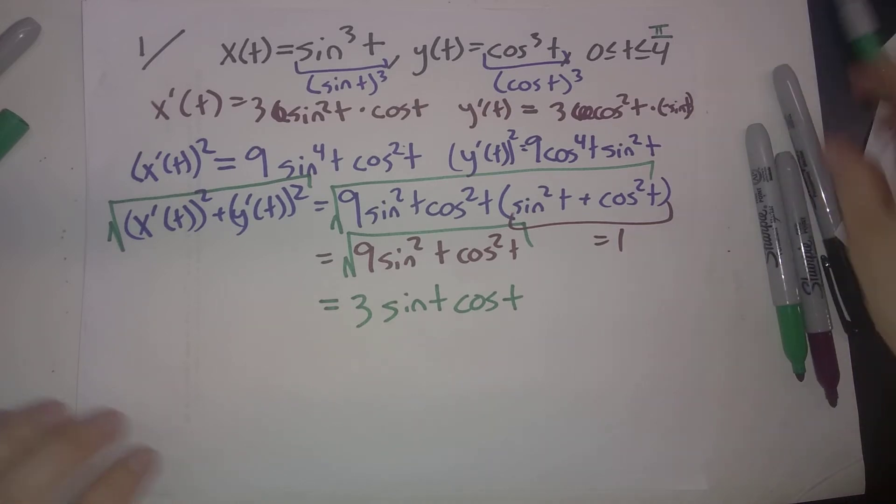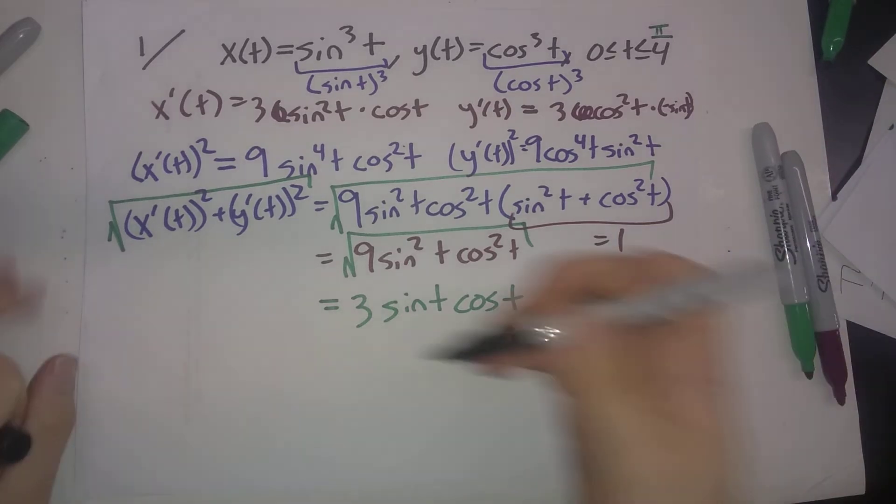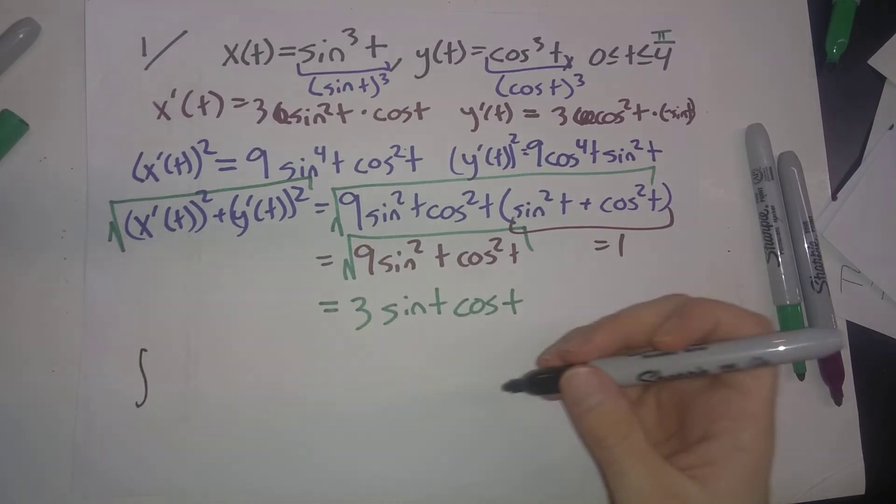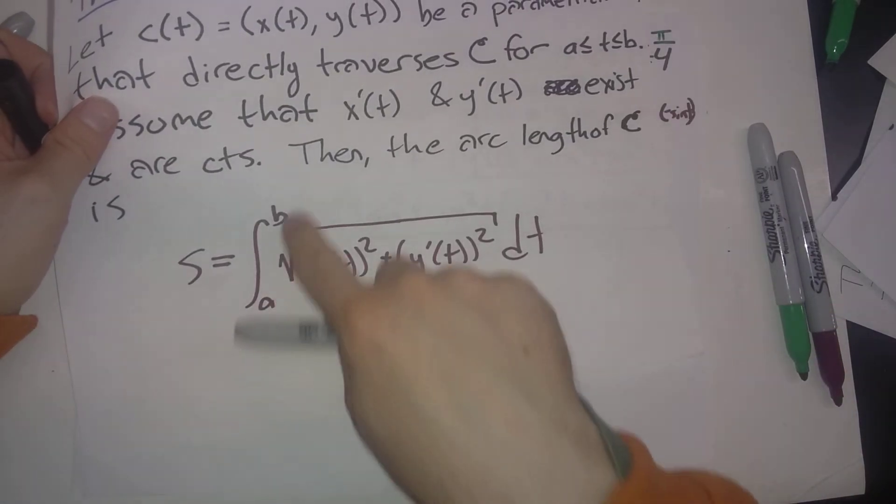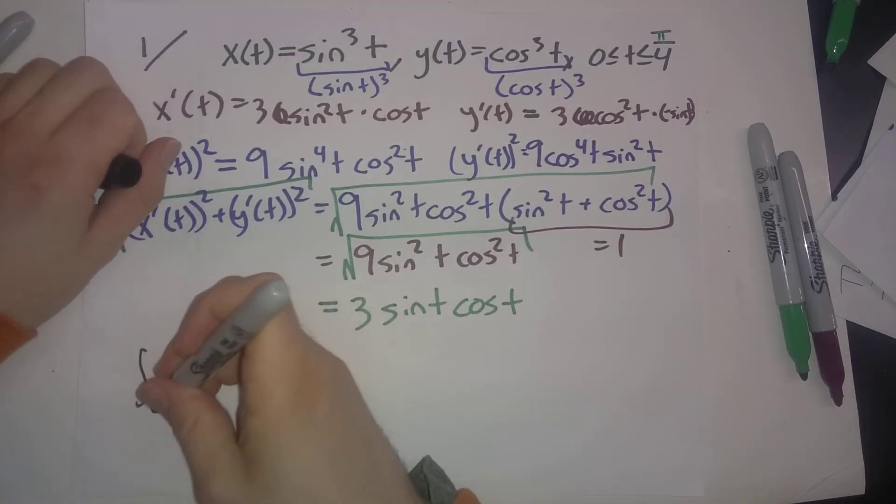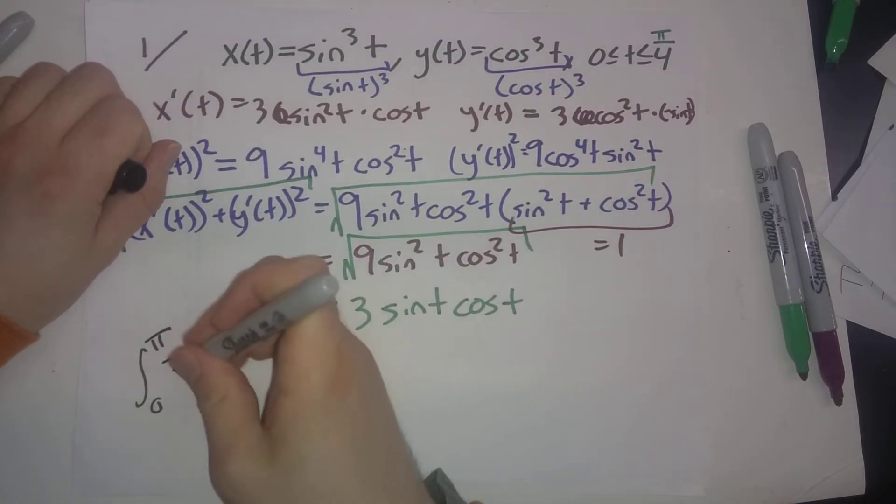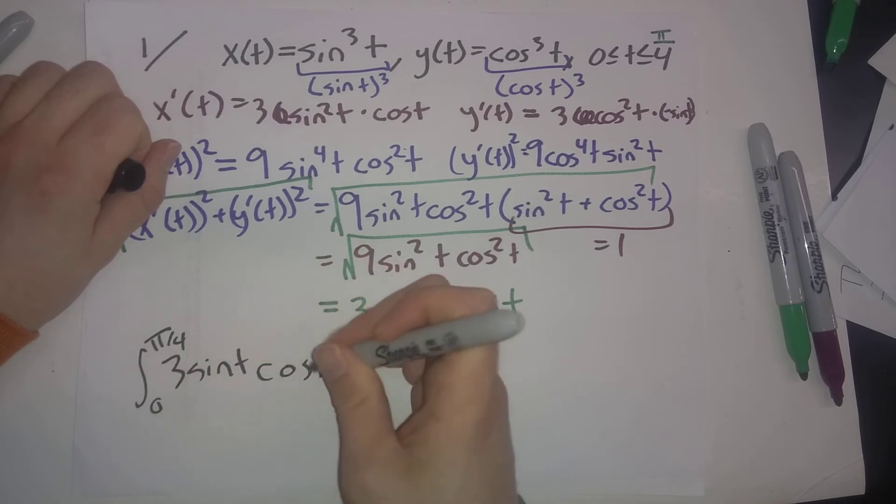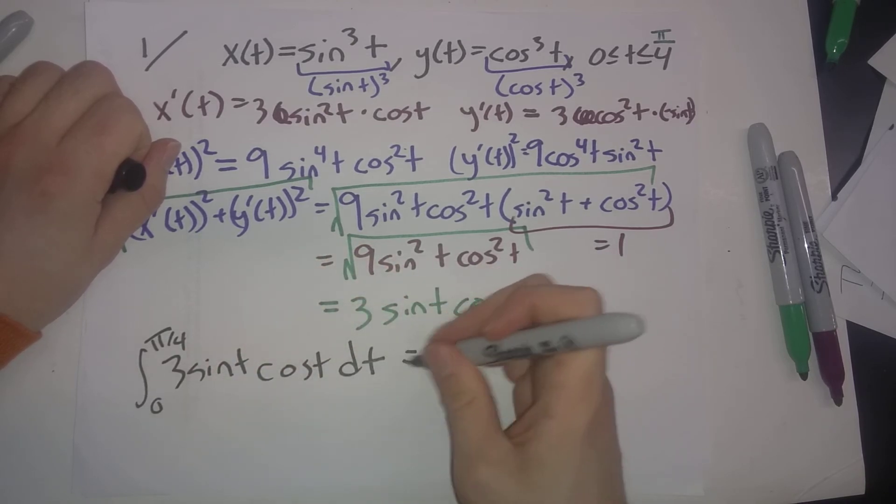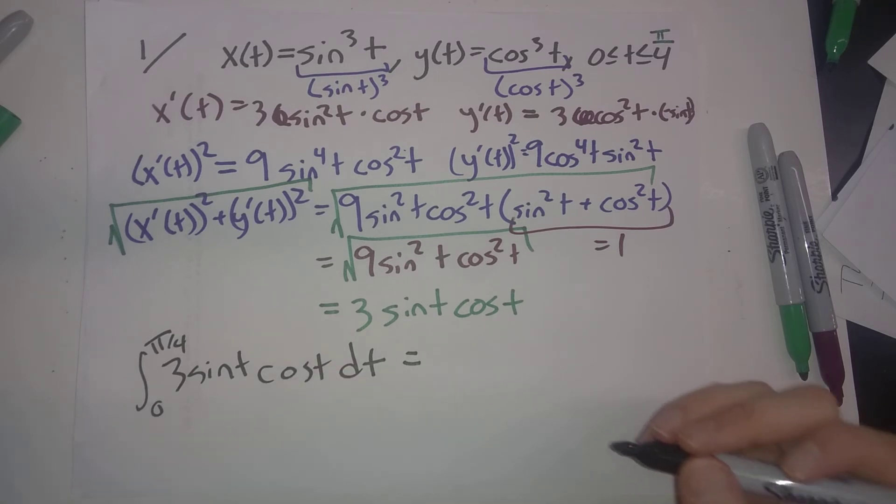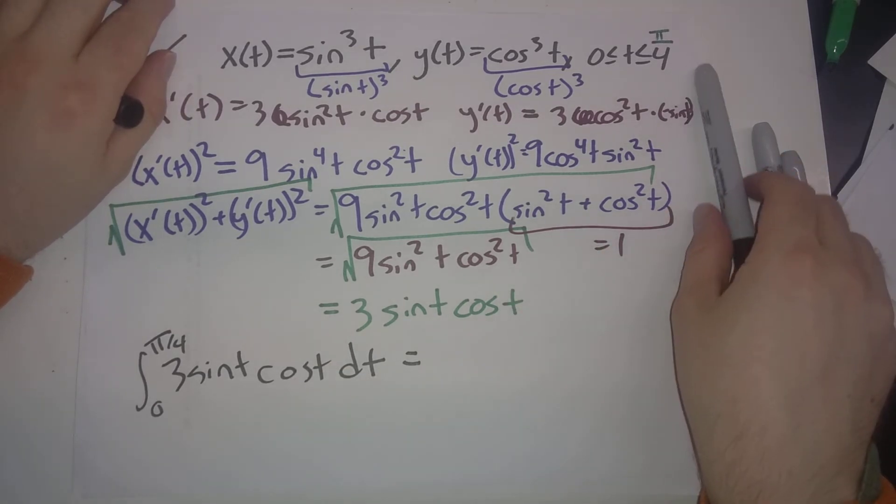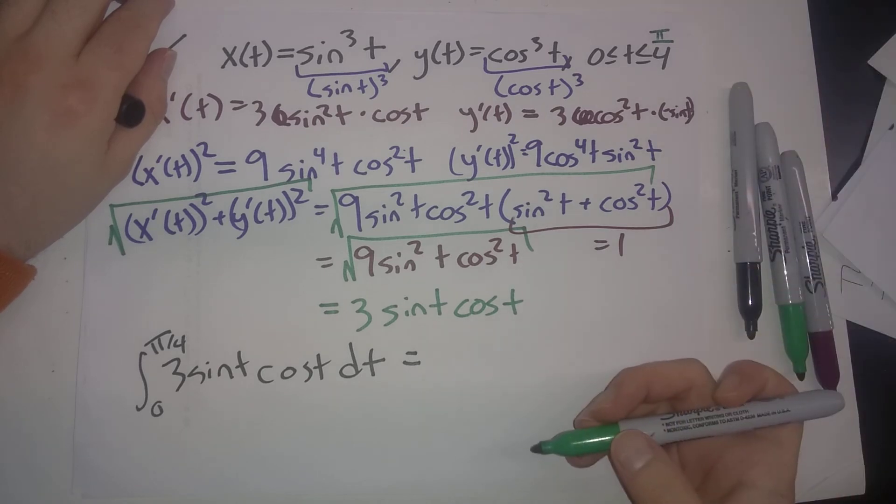To get our final answer, using this formula, we integrate from 0 to π/4: ∫3sin t cos t dt. When you crunch this out, you can do this by substitution.